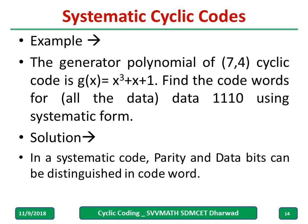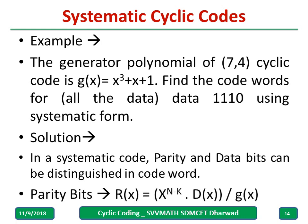Now, first step. In systematic you have to remember parity and data bits can be distinguished in a codeword. Means a few bits will be parity bits, few bits will be data bits. We can distinguish. Parity bits are given by r(x) = Xⁿ⁻ᵏ · d(x) divided by g(x).